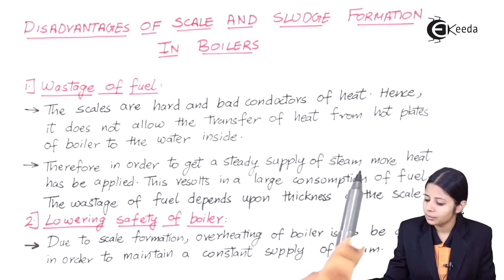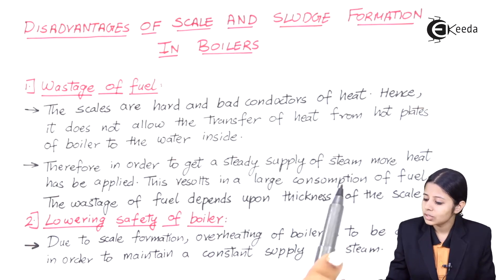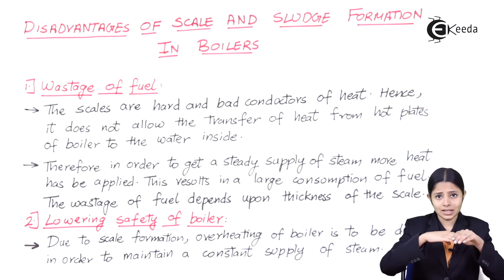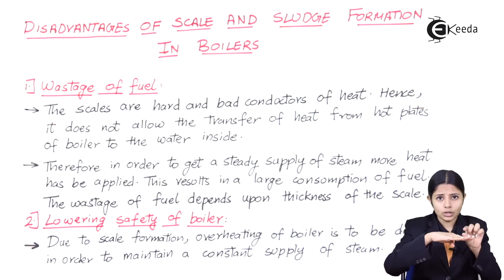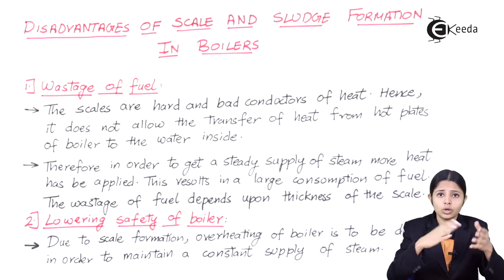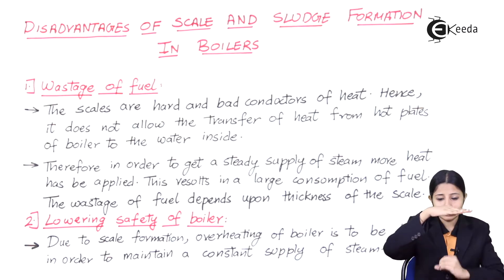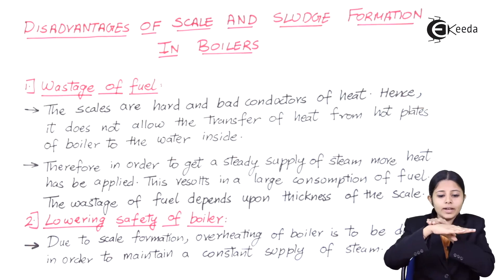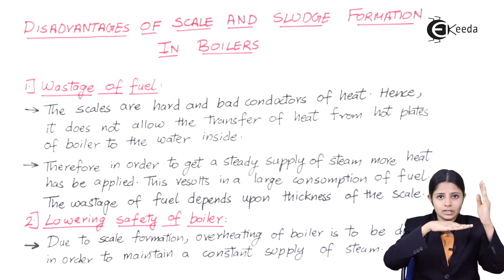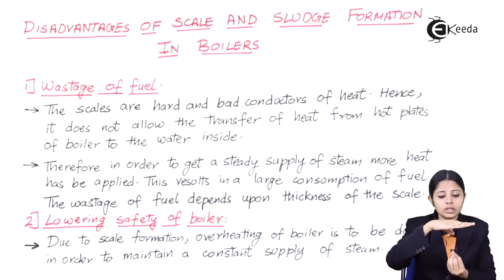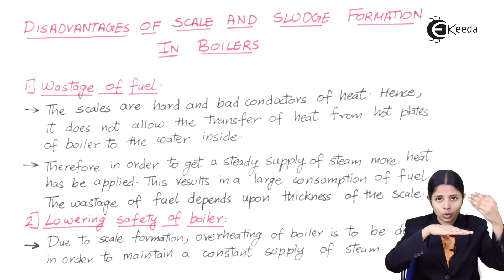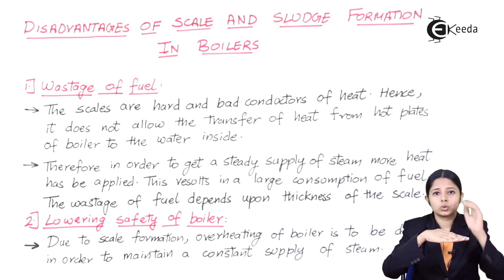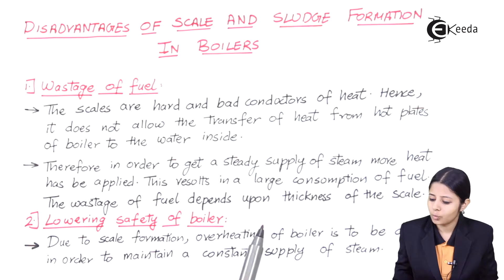Therefore, in order to get a steady supply of steam, more heat has to be applied, resulting in large consumption of fuel. The wastage of fuel depends upon the thickness of the scale. Scale is a hard layer of impurities and earth particles from hard water that has settled in the boiler. If the scale layer is thin, heat passes easily; but if the scale is thick, heat is trapped and the water above does not get boiled, requiring even more fuel.